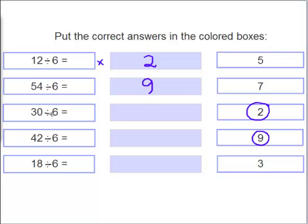30 divided by 6 equals 5. 42 divided by 6. Is it 7 or 3? Yes, it is 7. And the last one, 18 divided by 6 equals 3.